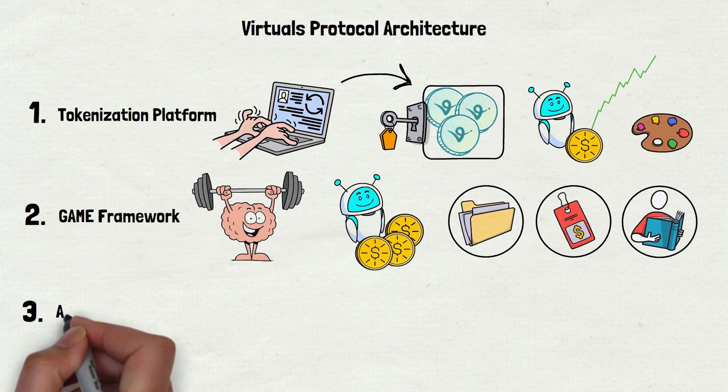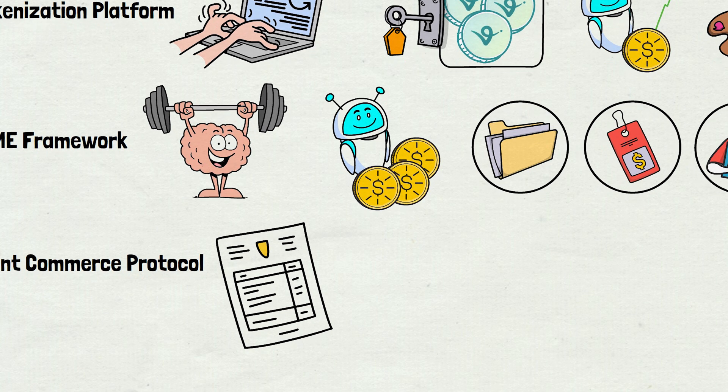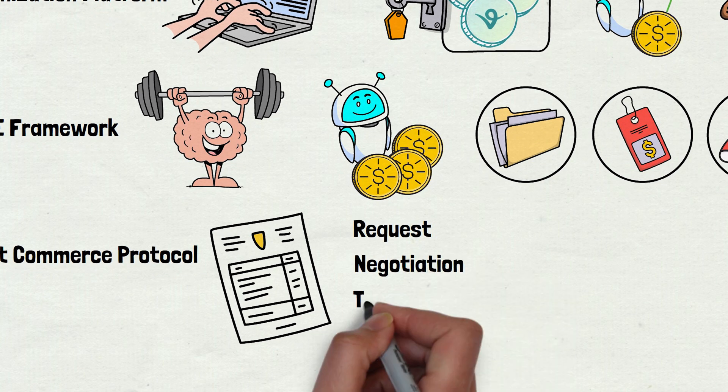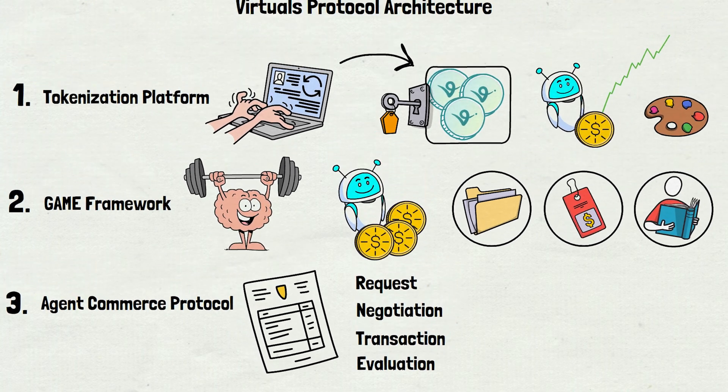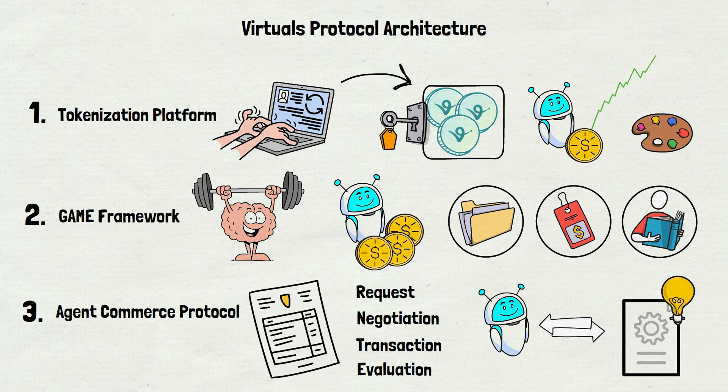Third, the agent commerce protocol ties it all together. It's the set of rules we talked about: request, negotiation, transaction, and evaluation. It makes sure agents can trade services smoothly, with smart contracts keeping everything on track. Together, these parts build a system where AI agents can run their own little businesses, all on the blockchain.